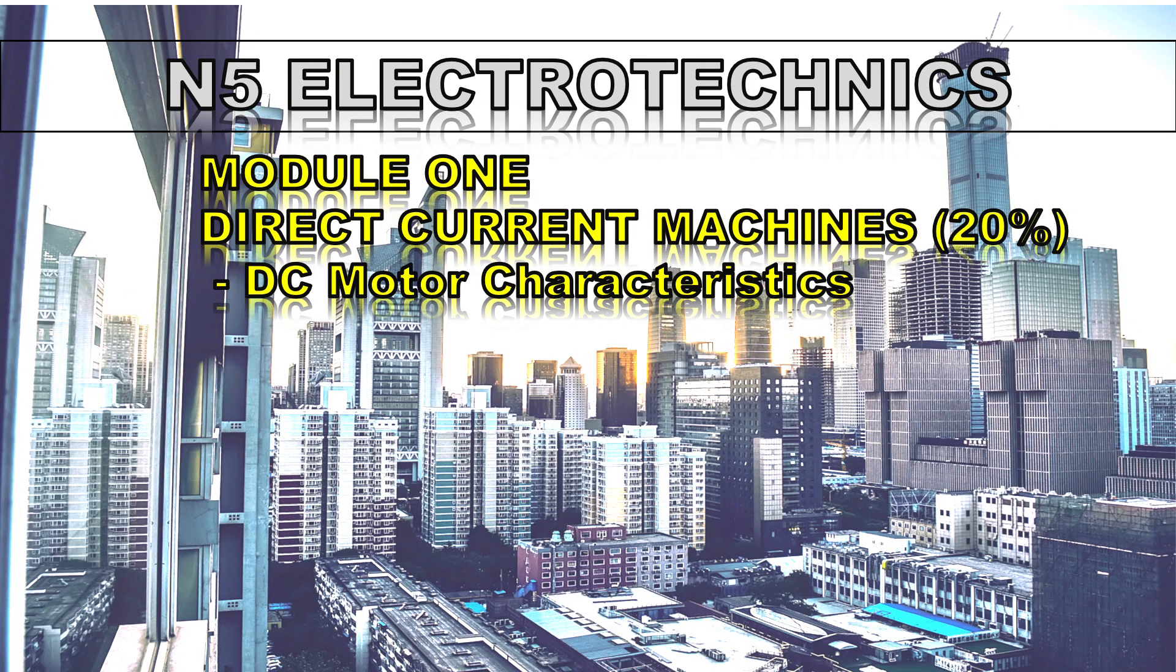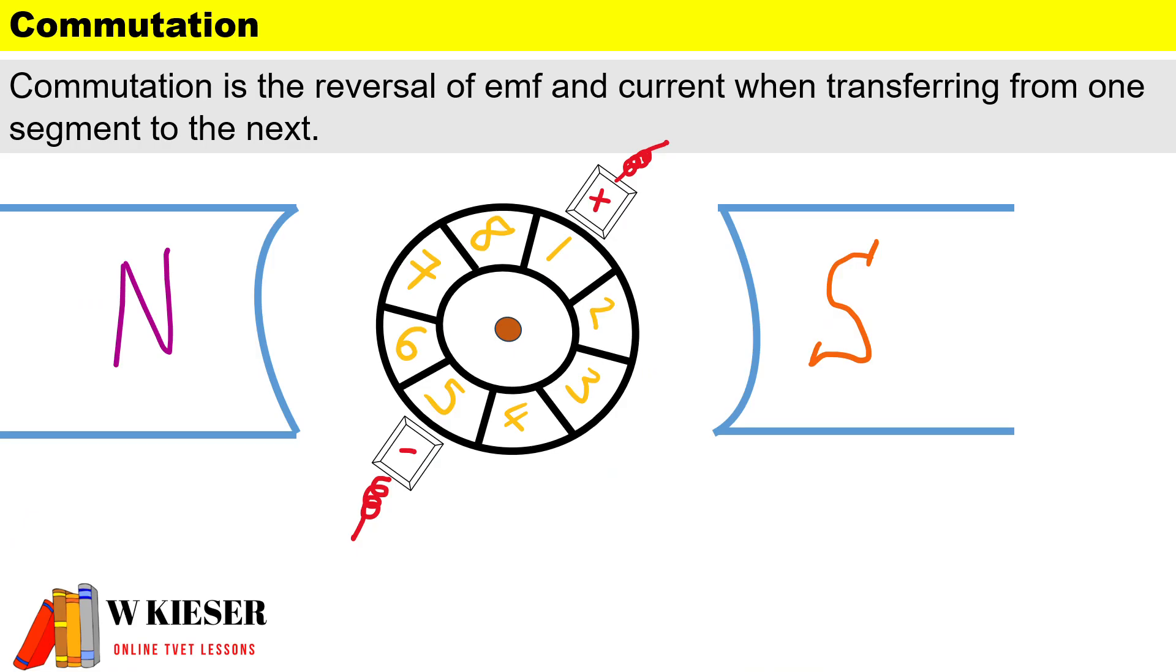In this calculation for N5 Electro Techniques, we'll be looking at an example to calculate the number of compensating windings turns per pole. First, some background: commutation is the reversal of EMF and current when transferring from one segment to the next.